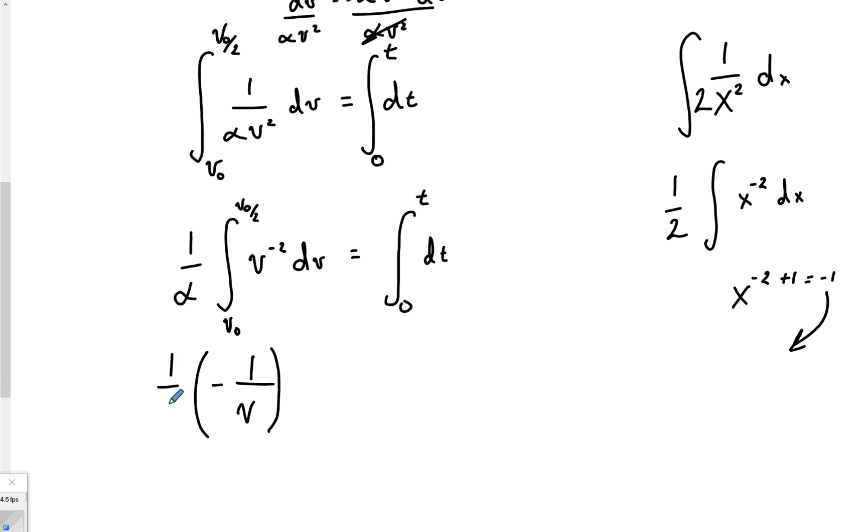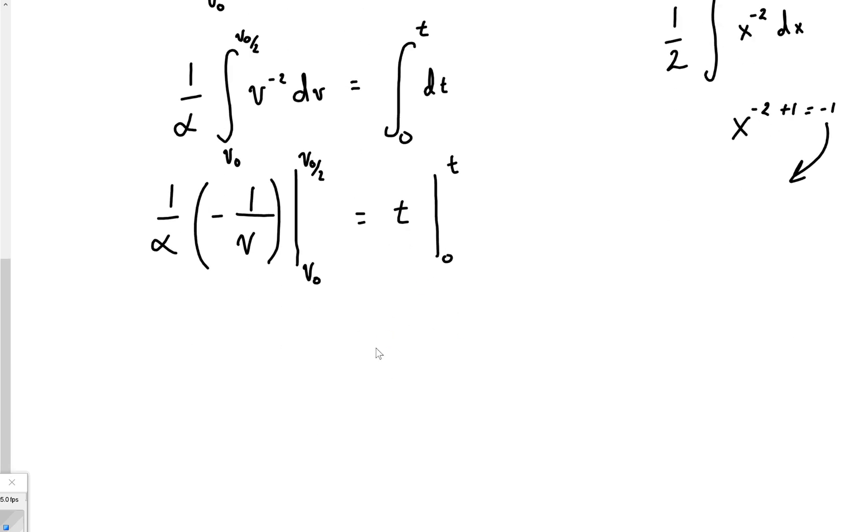So that's still, don't forget your constant. And we've got to evaluate this side now. Don't forget that. So we're going to evaluate that from v0 to v0 over 2. And then on the other side, well, integrate this, just dt. Well, that's just t. But we've still got to evaluate that. And we're going to evaluate that from 0 to t.